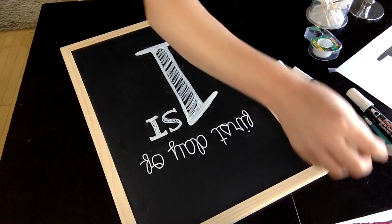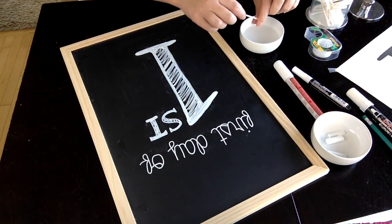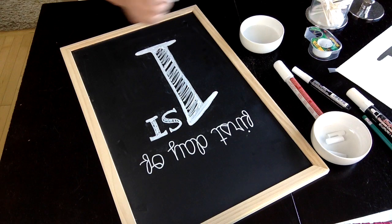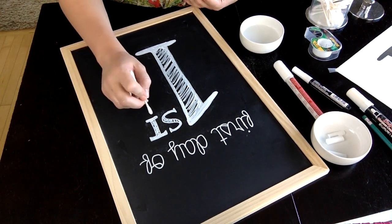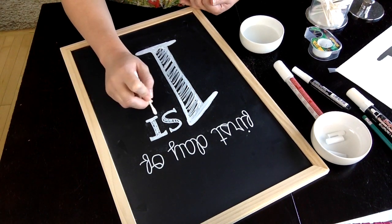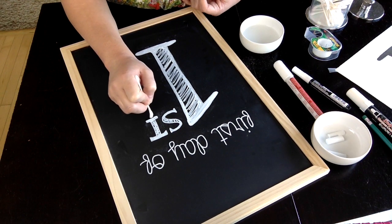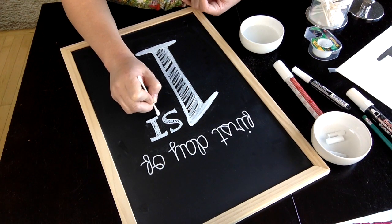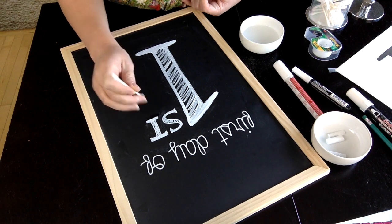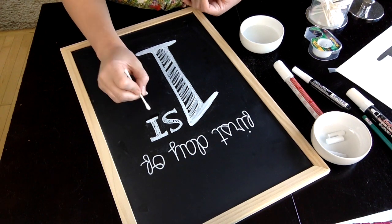I'm just taking a Q-tip and dipping it into a little dish of water, kind of wringing it out so it's not too wet. Anywhere like the bottom of this T, for example, I got a little sloppy here, so it's not really a straight across line on the bottom. I'm just going to go right over that and make that a straight across line.